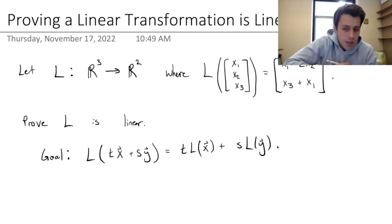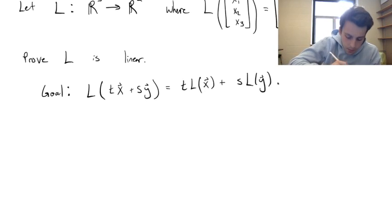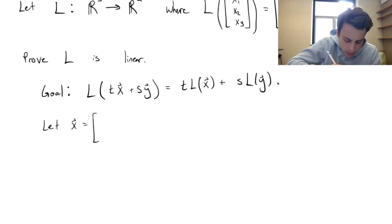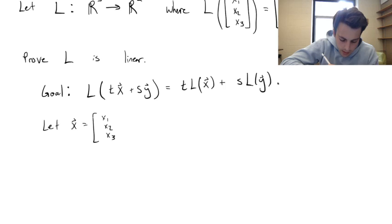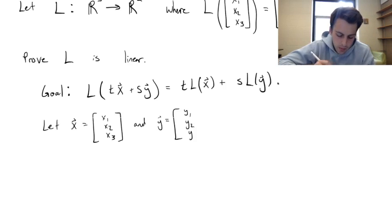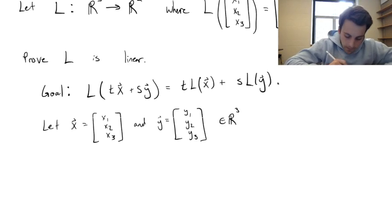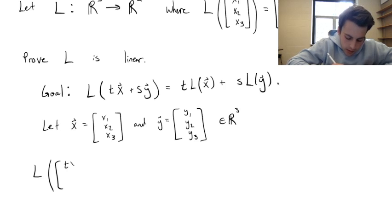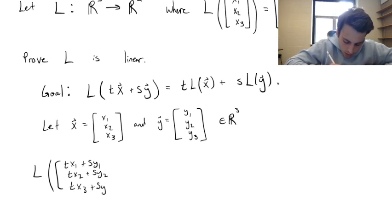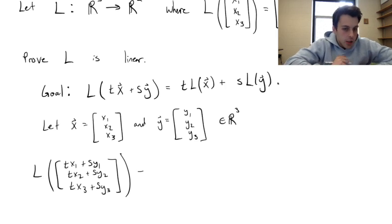This is what we're trying to show, and it's honestly not too bad. Let x be equal to (x1, x2, x3) and let y be equal to (y1, y2, y3). These are all vectors in R3. We are trying to plug in the vector (tx1 + sy1, tx2 + sy2, tx3 + sy3).